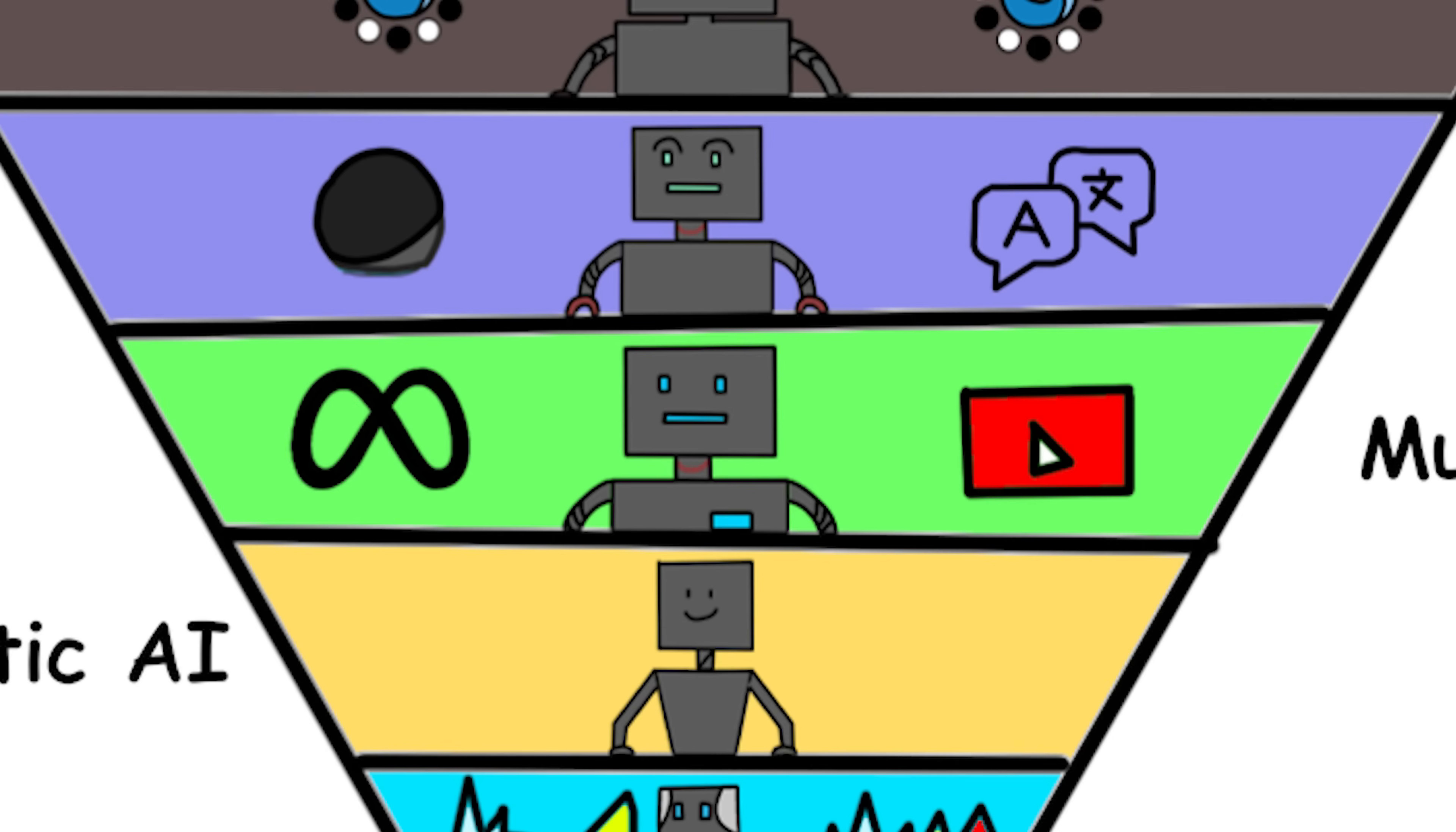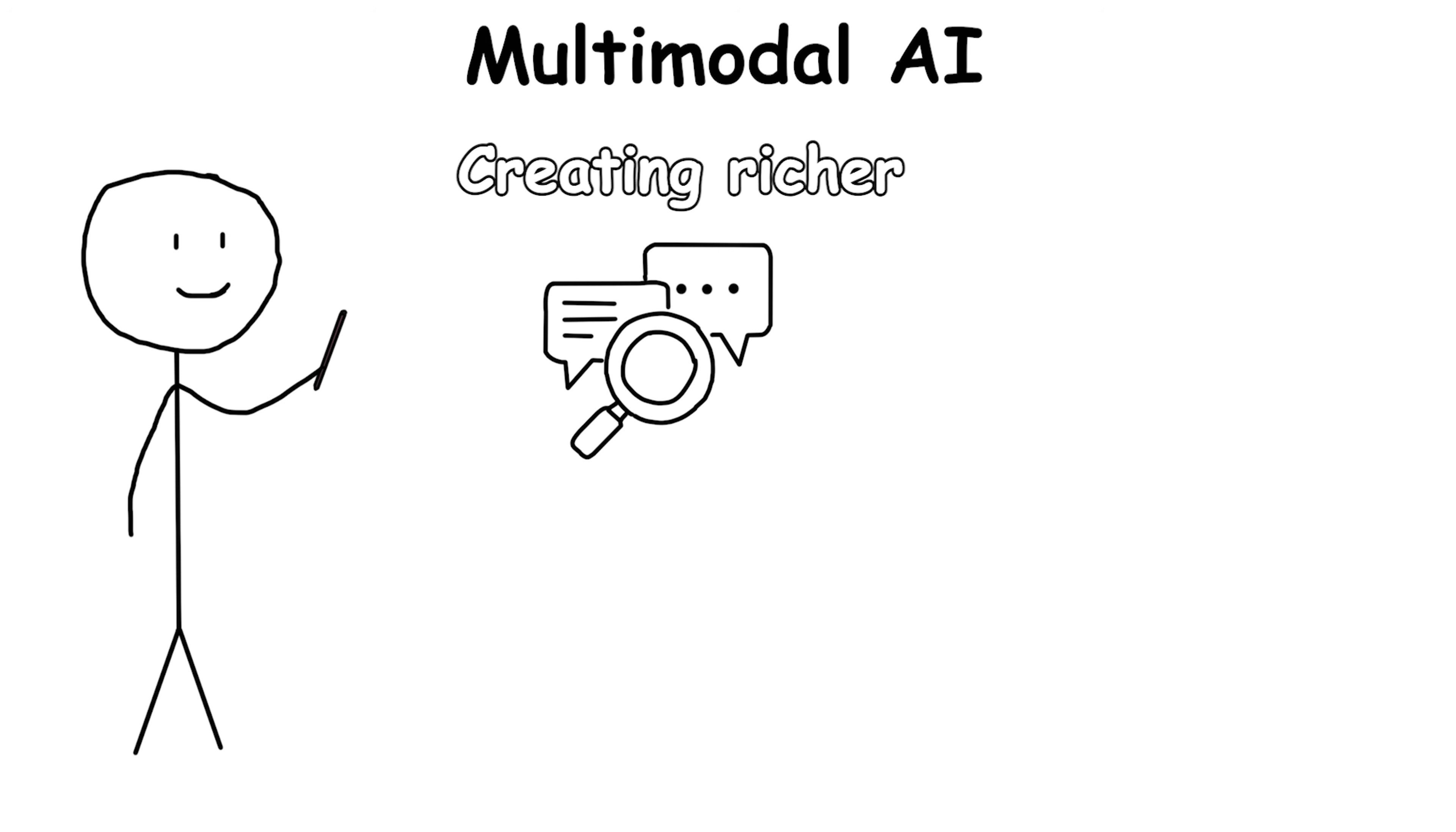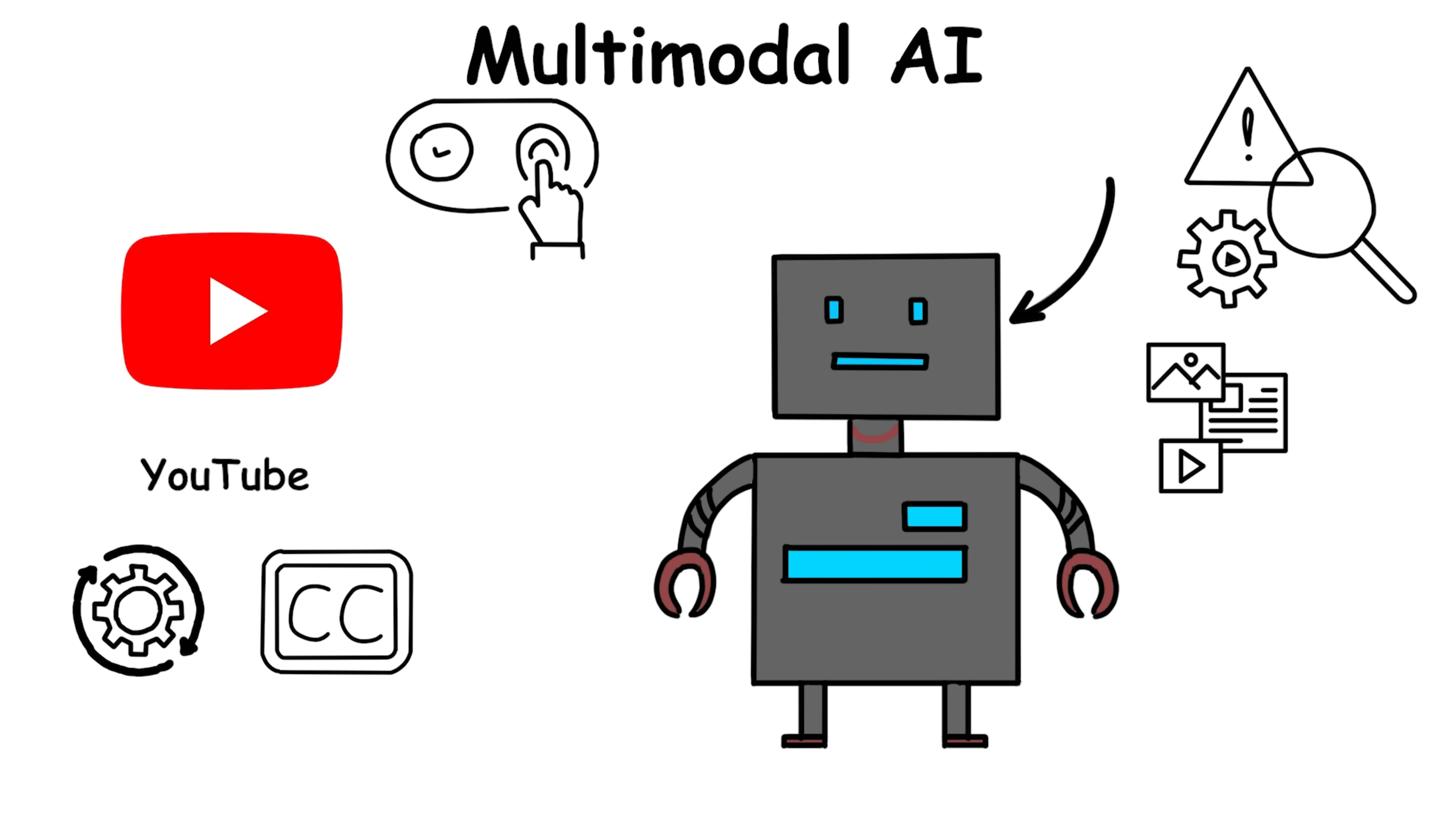Multimodal AI combines multiple data types simultaneously - text, images, audio, video - creating richer, context-aware understanding that single-mode systems like NLP or pure vision models cannot match. It's what enables YouTube's automated captioning and content analysis to flag inappropriate visuals while also transcribing speech.